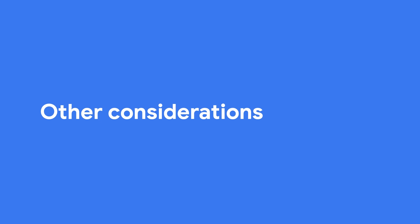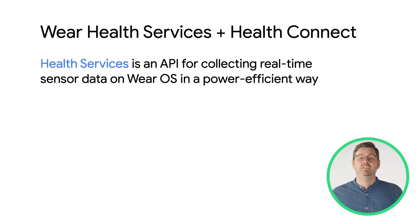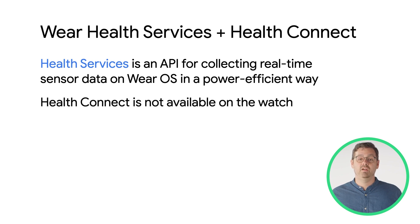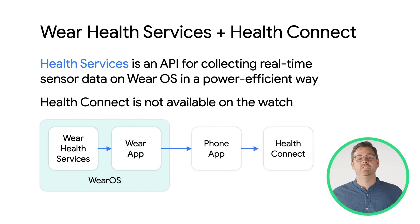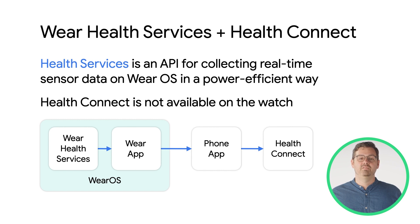We have a few other things to bear in mind as you move through your planning and integration work. HealthConnect is an API for collecting real-time sensor data on Wear OS in a power-efficient way, and can be combined with Wear Health Services to store and share rich data from wearable sensors. However, HealthConnect is not available on Wear OS directly. You can use Wear Health Services to get the data from wearables, then send that data to the phone to store and share with HealthConnect. Health Services supports passive and active data collection, and developers need to sync watch data to their app — either directly or via the cloud — and then have their phone app write the data into HealthConnect.